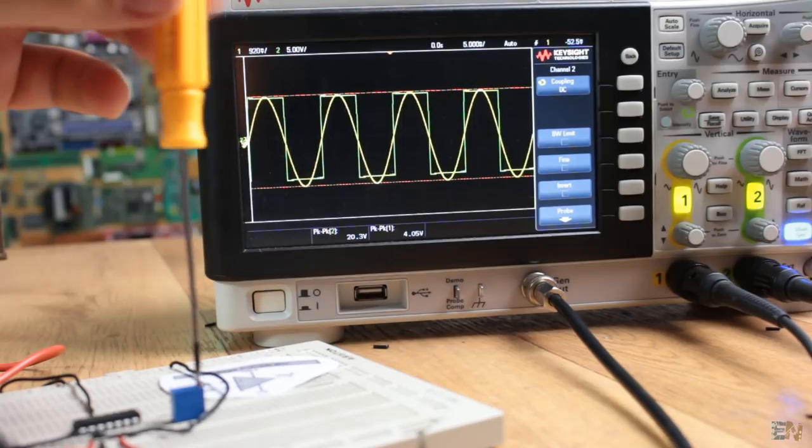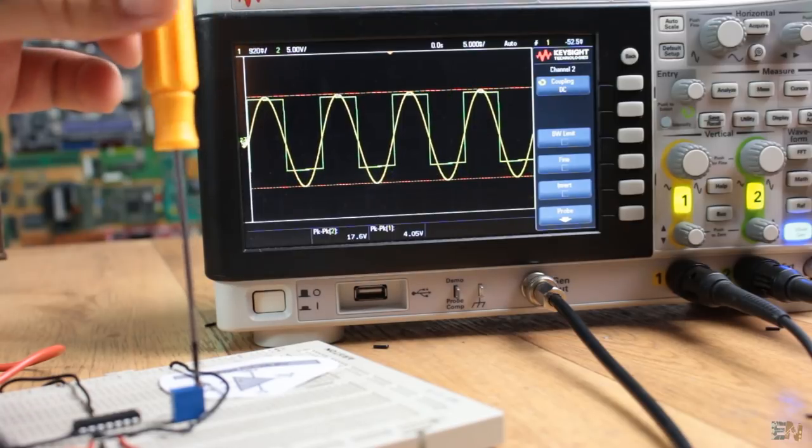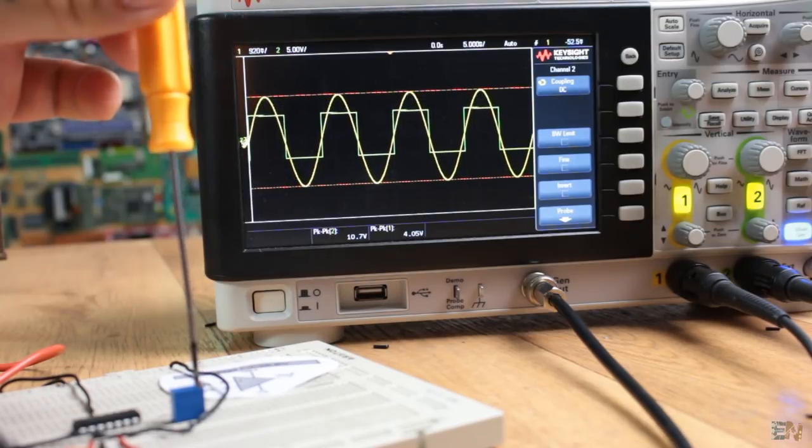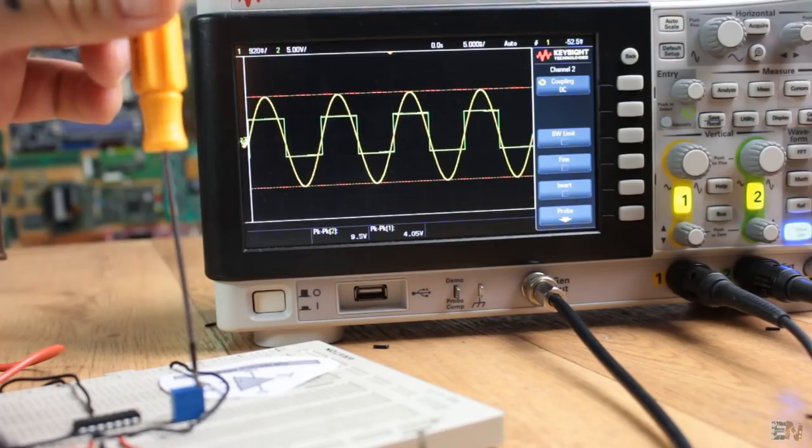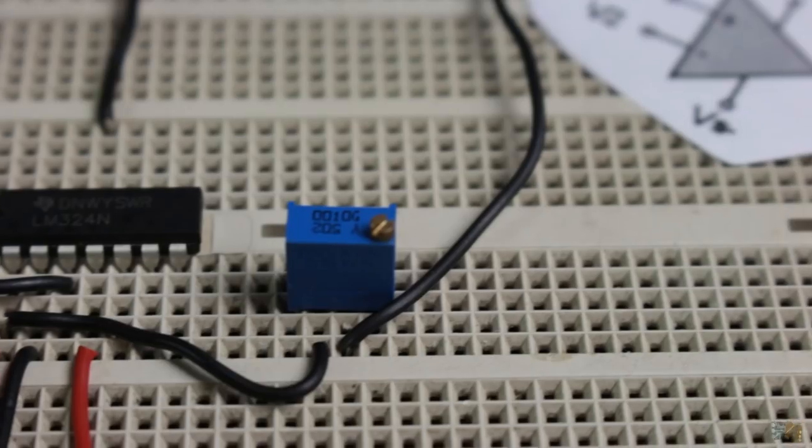When the load is high, we have no problem, but when I start lowering its value, we can see that the output gets saturated. That's because the op amp has an output current limit.